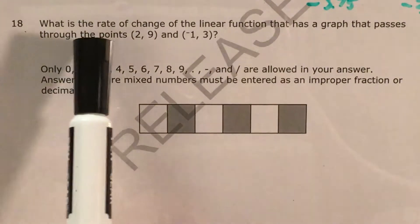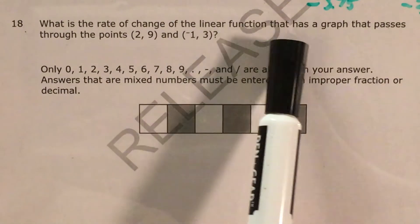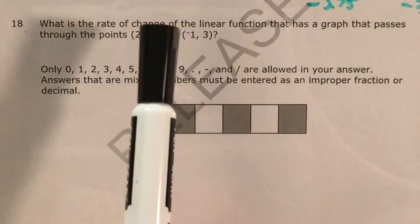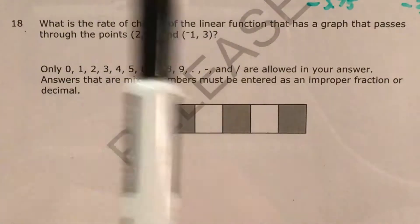We can see that the question is just asking us to find the rate of change of the linear function that has a graph that passes through the points (2, 9) and (-1, 3).